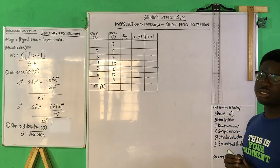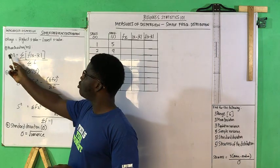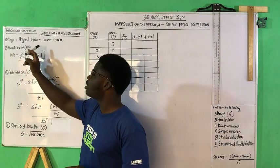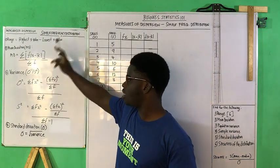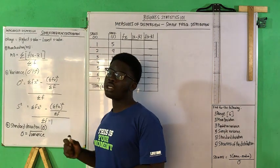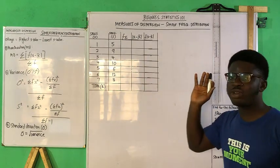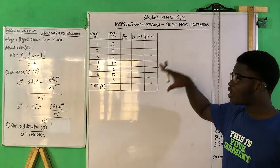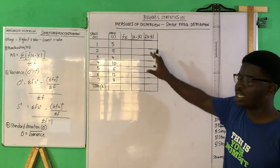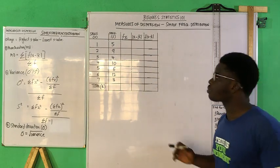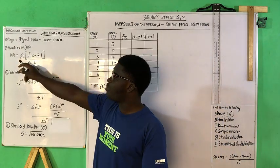Let's get to the mean deviation. The mean deviation formula is given as: MD equals the summation of the frequency multiplied by the absolute difference between the x values and the mean (x-bar), divided by sigma f. If you pay attention, you'll realize that we'll be solving the mean deviation before the variance and then the standard deviation. Let me break down how we arrive at this table.